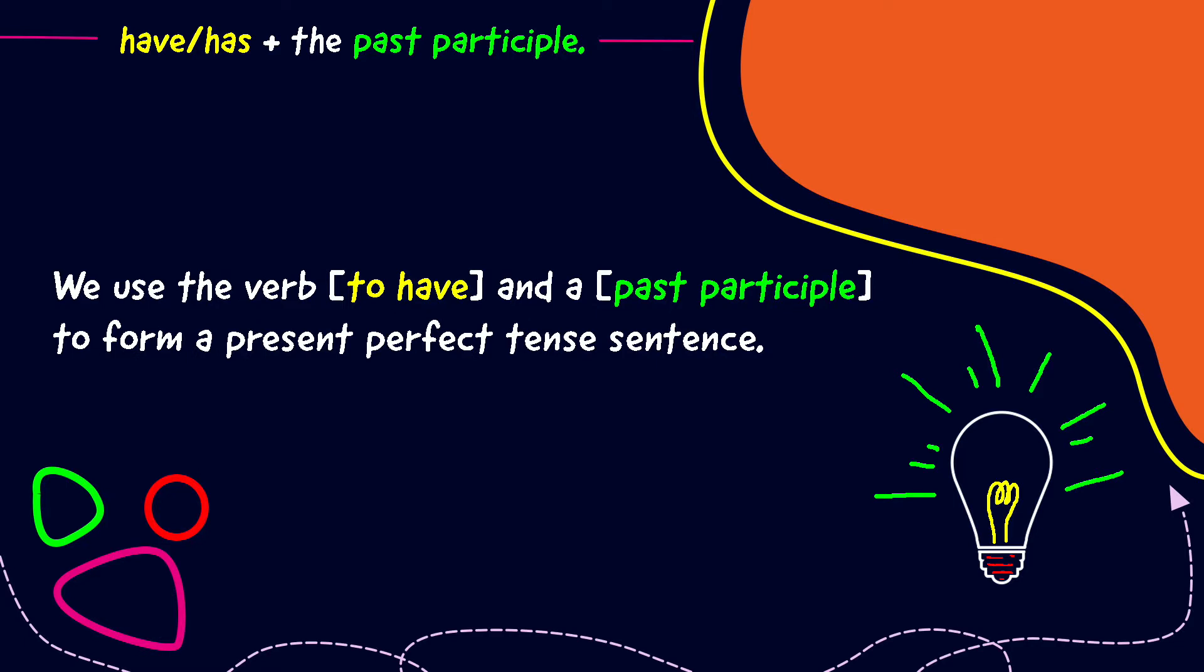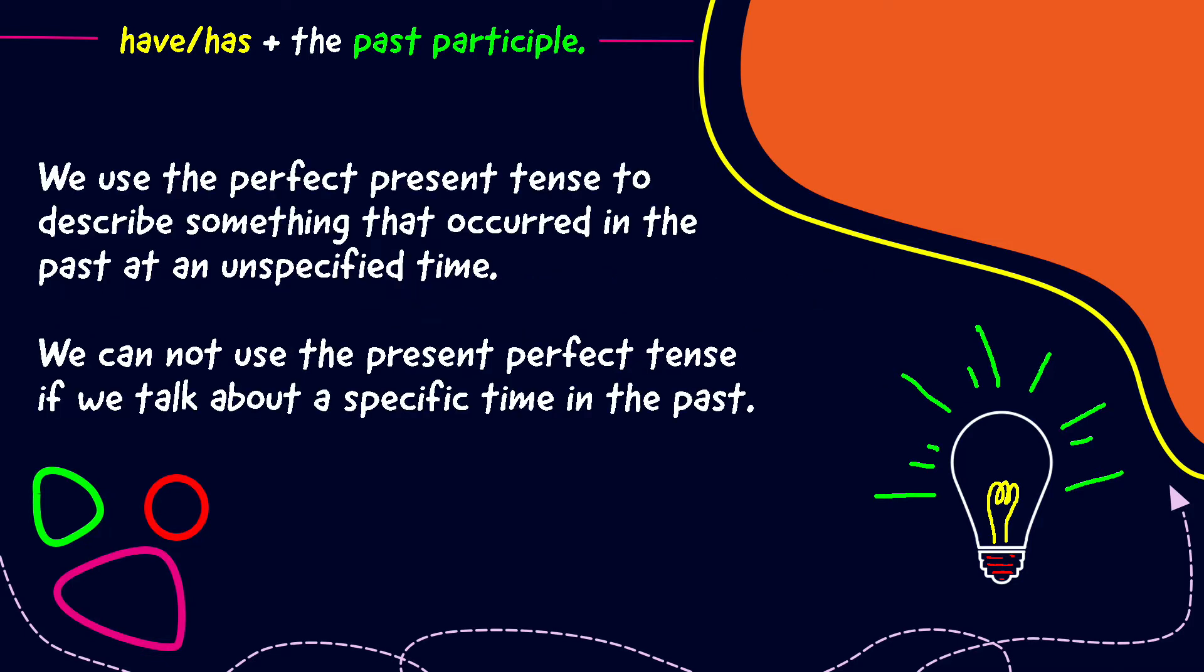We use the verb to have and a past participle to form a present perfect tense sentence. We use the present perfect tense to describe something that occurred in the past at an unspecified time. We cannot use the present perfect tense if we talk about a specific time in the past.